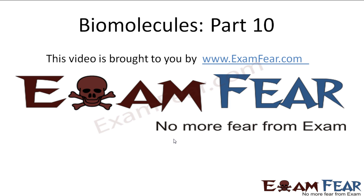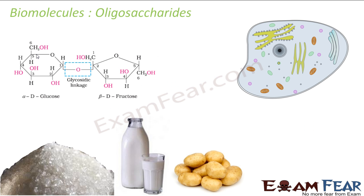This video on biomolecules part 10 is brought to you by examfier.com. Let's talk about oligosaccharides — 'oligo' means few, so oligosaccharides are carbohydrates that give you 2 to 10 monosaccharides, or 2 to 10 sugar molecules. They are found in the plasma membrane of the cell.